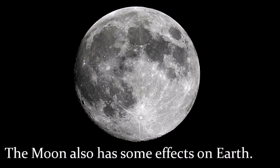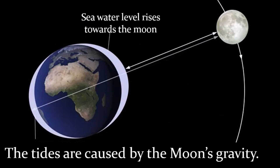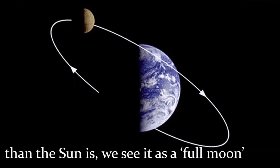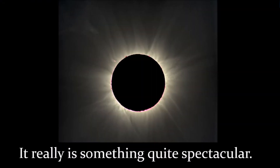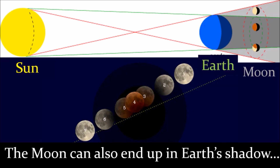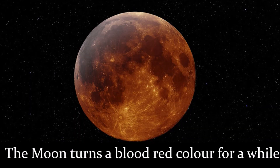The Moon also has some effects on Earth. It takes the Moon about one month — 28 days — to orbit Earth. The tides in the sea are caused by the Moon's gravity. When the Moon is on the other side of the Earth from the Sun, we can see it as a full Moon. Occasionally, the Moon blocks the Sun — it's called a solar eclipse, and it's really quite spectacular. The Moon can also end up in Earth's shadow, creating a lunar eclipse, and the Moon turns a blood-red colour for a while.